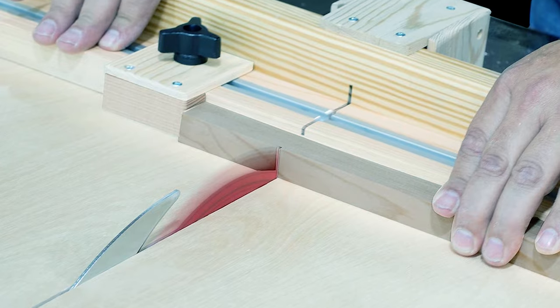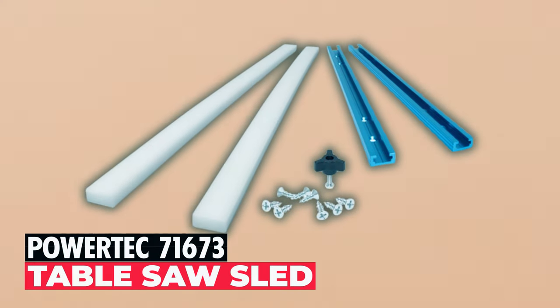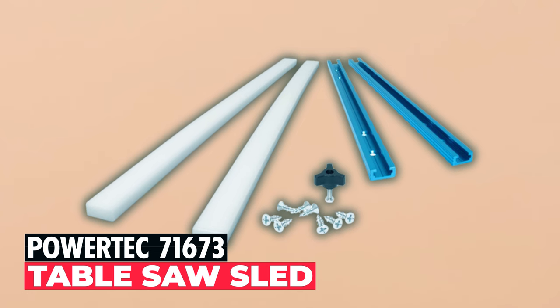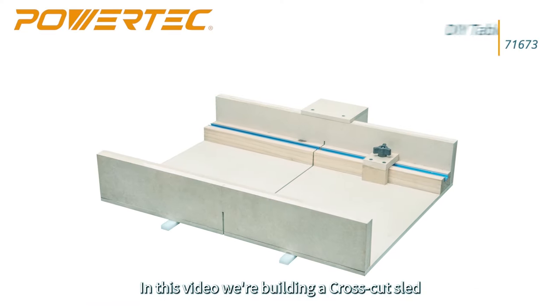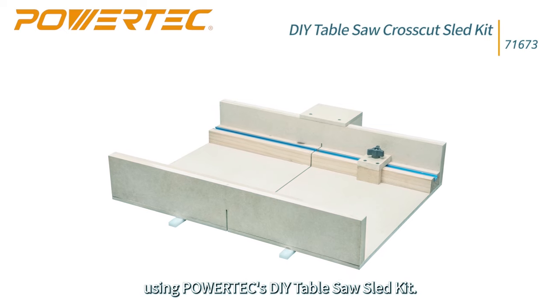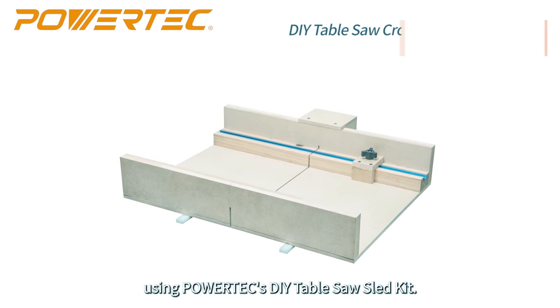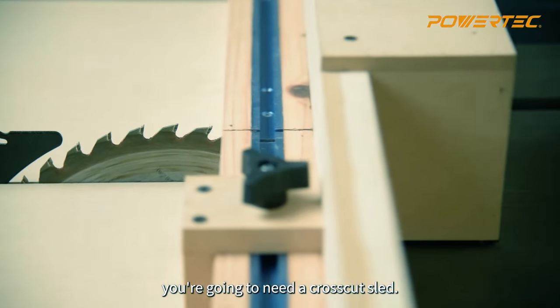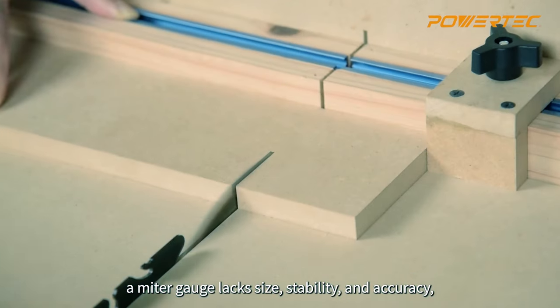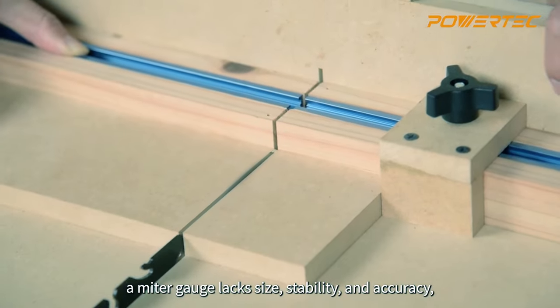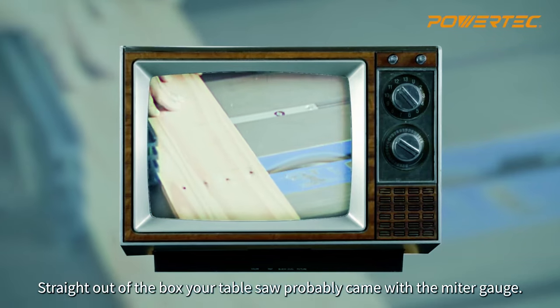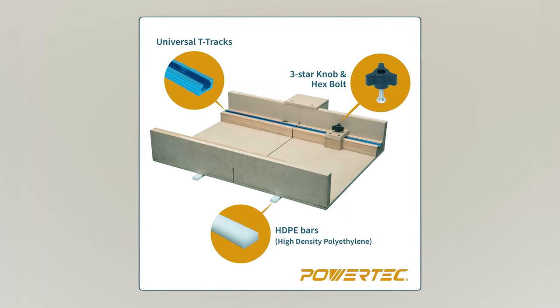PowerTex 71673 Table Saw Sled. Precision meets convenience with the PowerTex 71673 Table Saw Sled Kit. This kit equips you with everything needed to create a versatile table saw sled, minimizing measuring and cutting errors. It enhances crosscutting safety and efficiency, keeping you and your workpiece secure. The kit includes universal T-tracks,